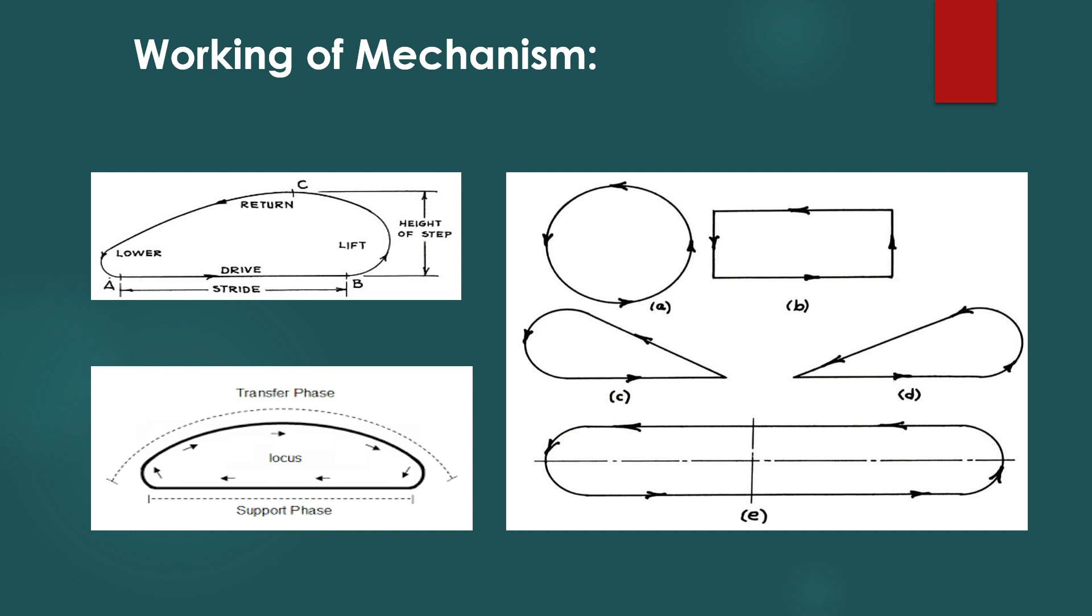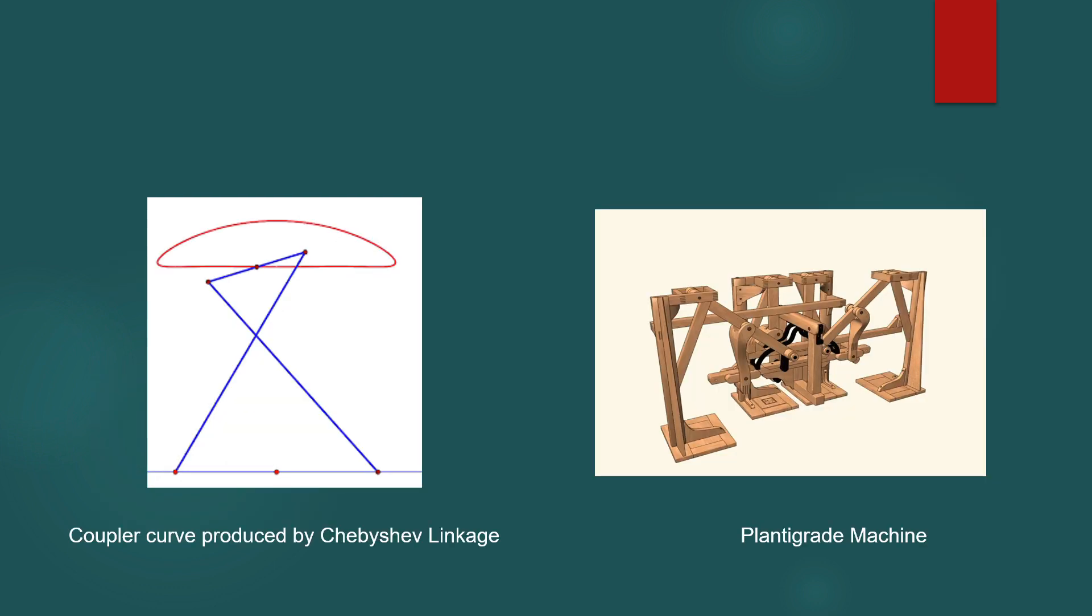One such curve can be produced by Chebyshev four-bar mechanism. The Chebyshev linkage is a symmetrical linkage which produces a symmetrical coupler curve of which the bottom half is approximately a straight line. This curve can be used to guide the leg and produce desired motion.